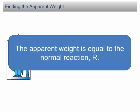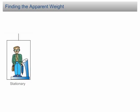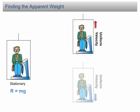In order to find the apparent weight, we need to know the state of motion. If the lift is stationary, the real weight and the normal reaction are in equilibrium. Therefore, the normal reaction, R, is equal to the real weight, mg. This is also true for motion at uniform velocity. When an object moves at uniform velocity, the forces acting on it must be in equilibrium. Therefore, the normal reaction is equal to the real weight of the object.